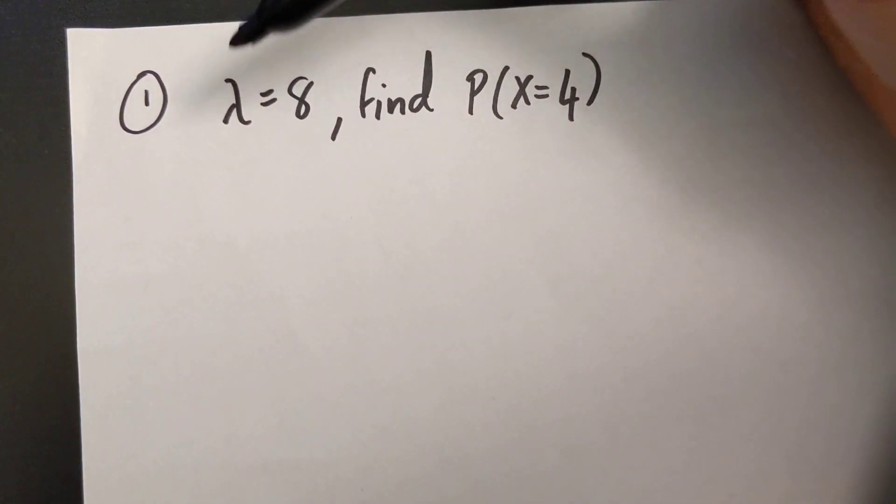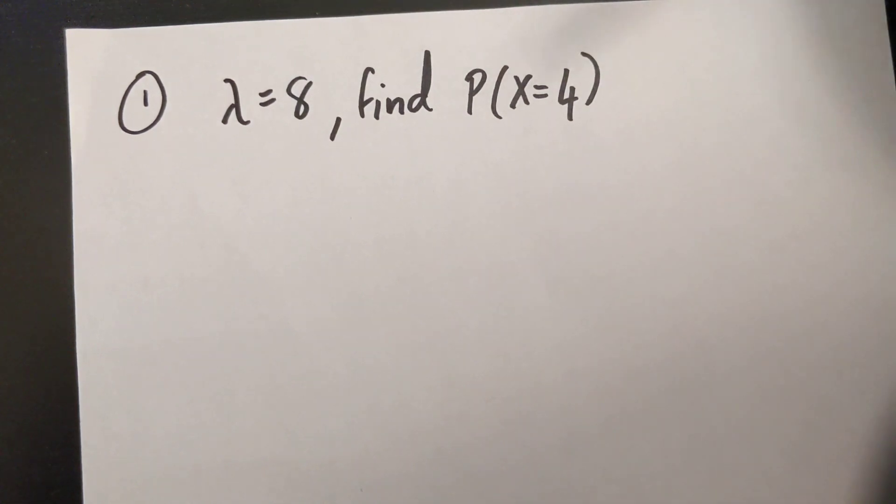Okay, so in this question it gives me my mean to be 8 and then it tells me to find the probability that x is equal to 4 and I'm using the Poisson equation in this question.